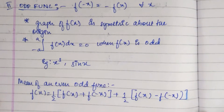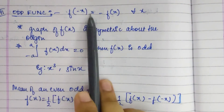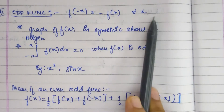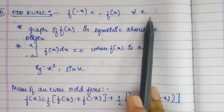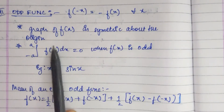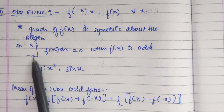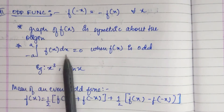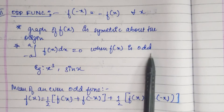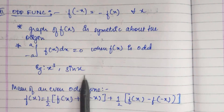Then we have odd functions. A function is odd when f of minus x equals minus f of x for all values of x. The graph of f of x is symmetric about the origin, and the integral from minus a to a of f of x dx equals 0 when f of x is odd. Some examples are x cubed and sin x.